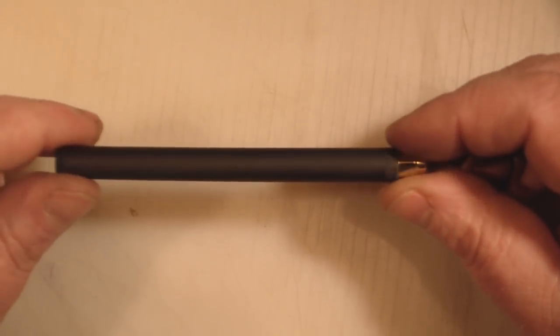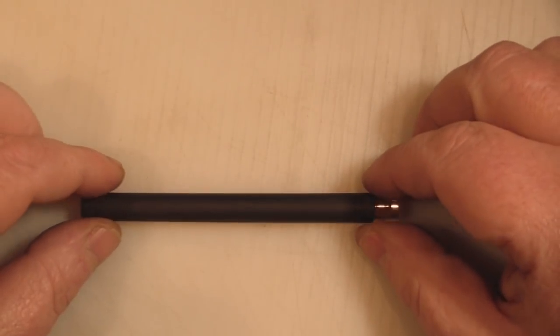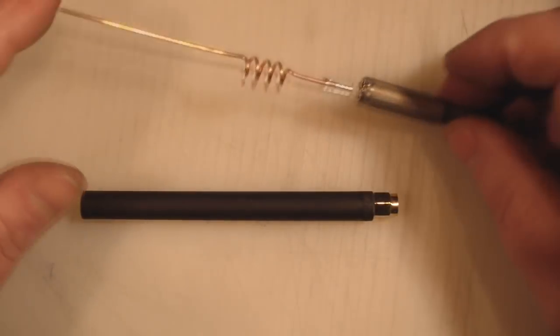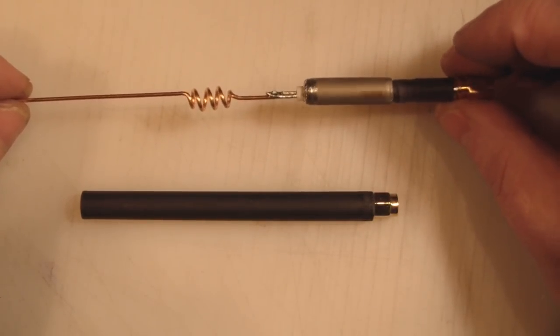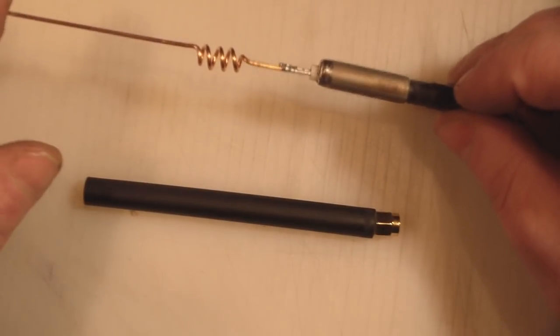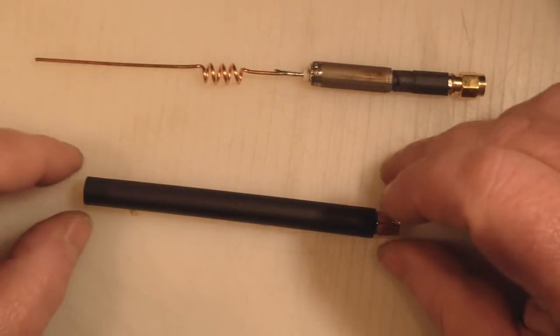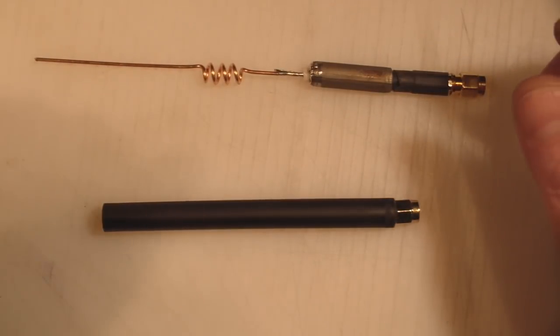So it's all finished now and I put it inside of an old pen and just sprayed it black. What I thought I'd do with this is hopefully I'll give it a try. Here we've got the 2.4 gigahertz one that I made in a previous video and thought we'd compare the 2.4 gigahertz with the 5 gigahertz one that I've just made.